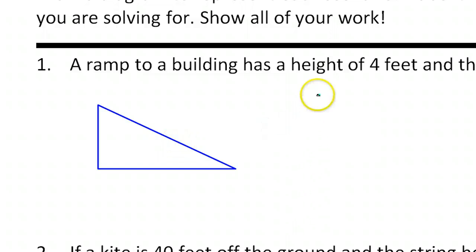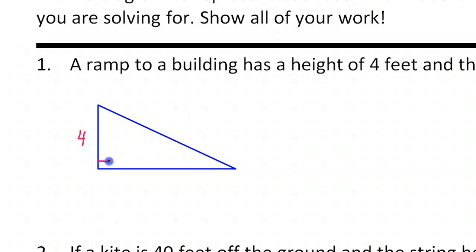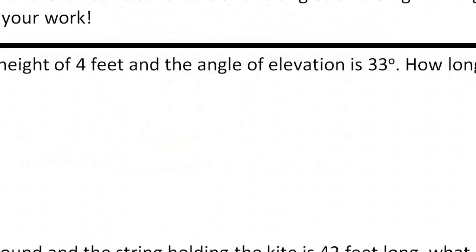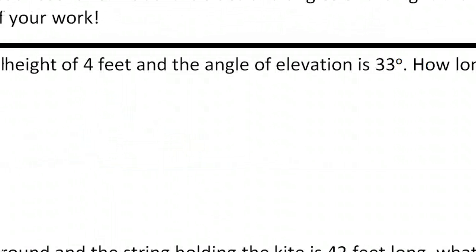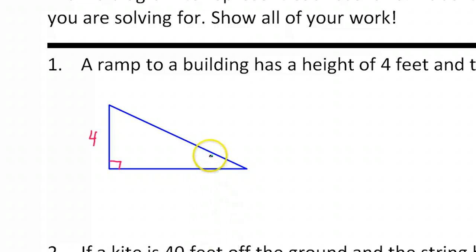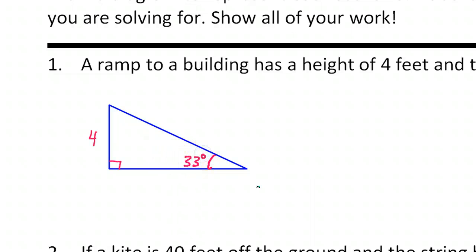So here's a ramp. It's supposed to have a height of four feet — that would be this over here. And an angle of elevation of 33 degrees. The angle of elevation is the angle to the ground, so that means this is 33 degrees.